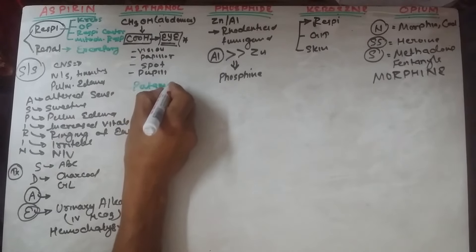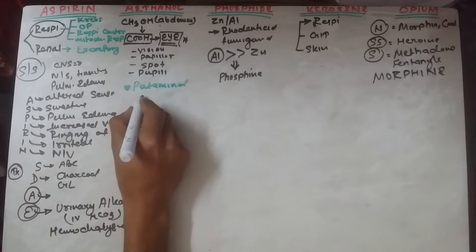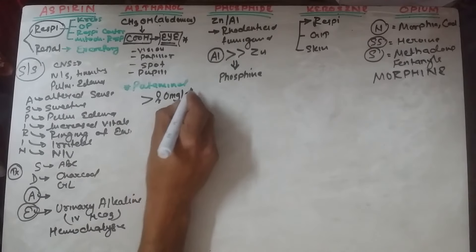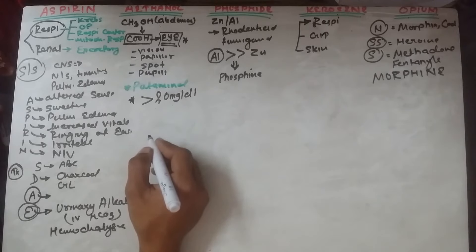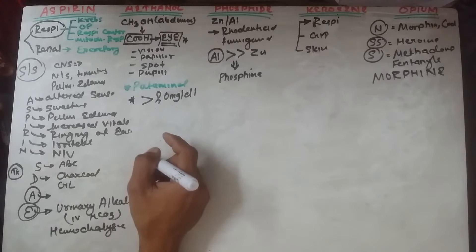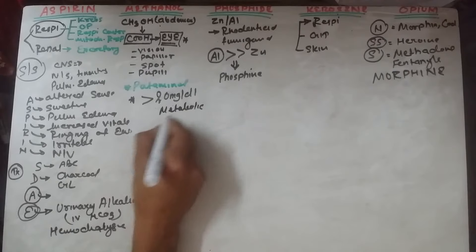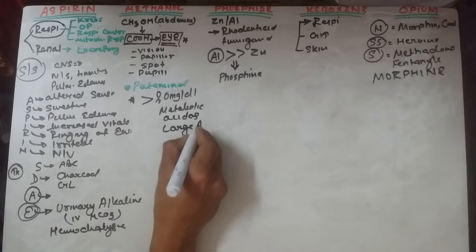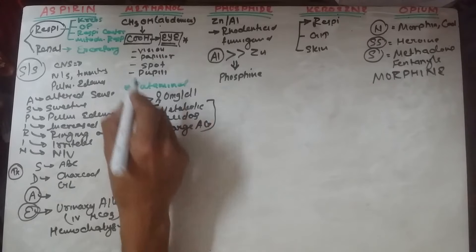For diagnosis, check methanol level in serum. If it is more than 20 mg/dL, methanol poisoning is confirmed. It usually causes a large anion gap metabolic acidosis, which is also suggestive of methanol poisoning.